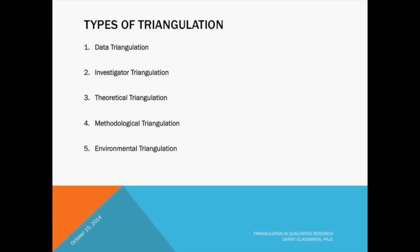So now we know what triangulation is — but are there different types or forms? Yes, there are. Dezen has identified four basic forms: data triangulation, which is the use of a variety of data sources in a study; investigator triangulation, which is the use of several different researchers or evaluators; theory triangulation, which uses multiple perspectives to interpret a single set of data; and methodological triangulation, which is the use of multiple methods to study a single problem or program. In addition, there is also environmental triangulation, employing different environmental locations in a research study.